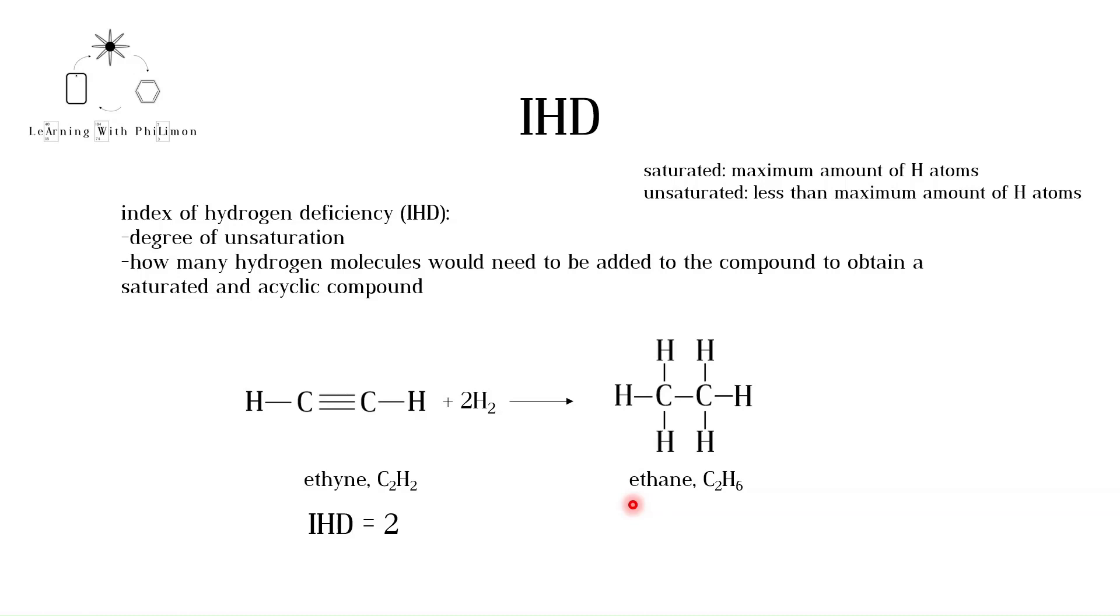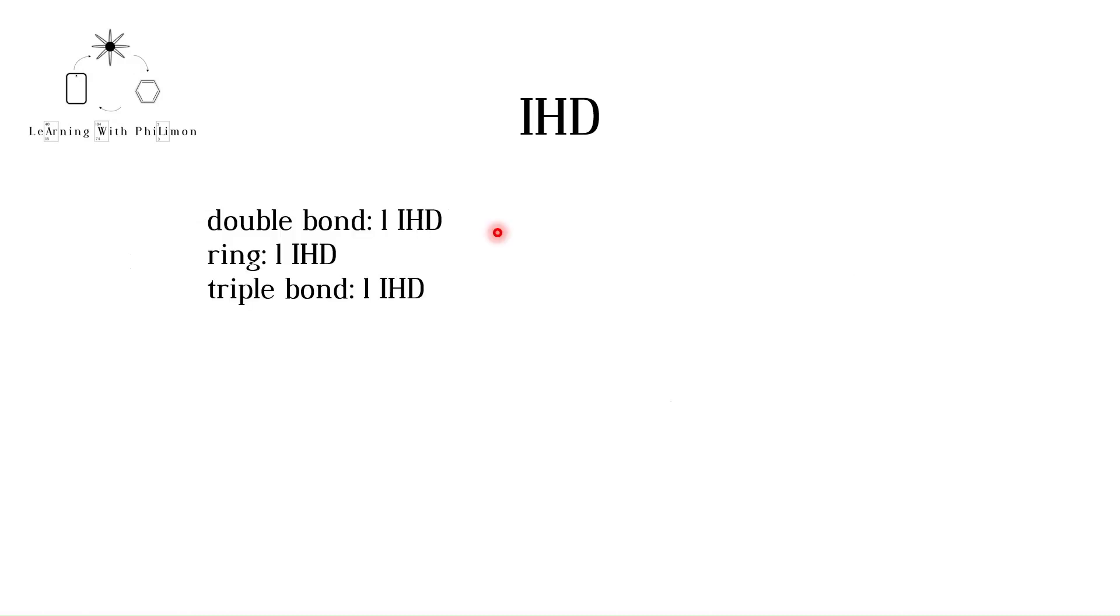Now let's take a look at how you can determine IHD from structural and empirical formulae. If you are given the structural formula of a compound, you can count the number of rings, double and triple bonds. The example below contains two double bonds, a carbon-carbon double bond and a carbon-oxygen double bond. The compound also contains a ring. This could be a four-membered, five or six-membered ring, for example. Adding up, we get an IHD of three.